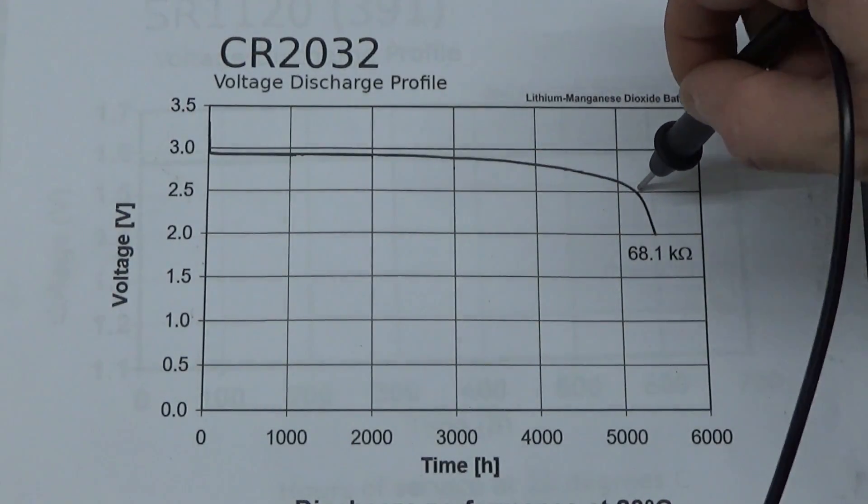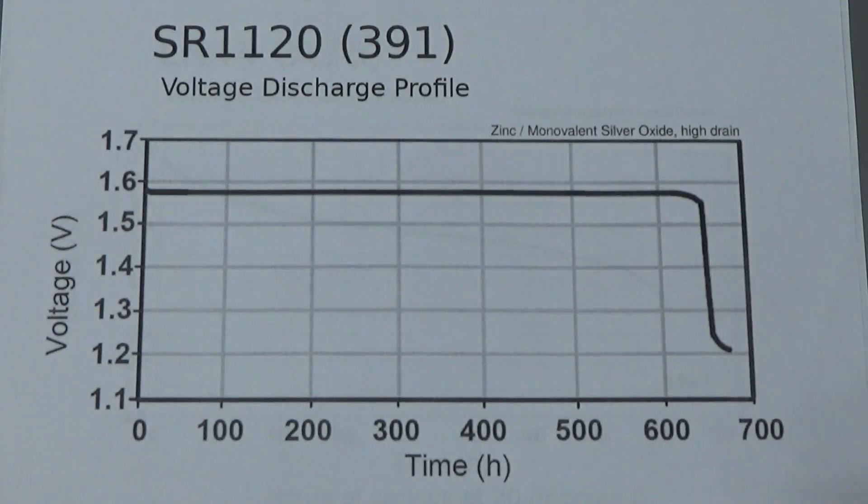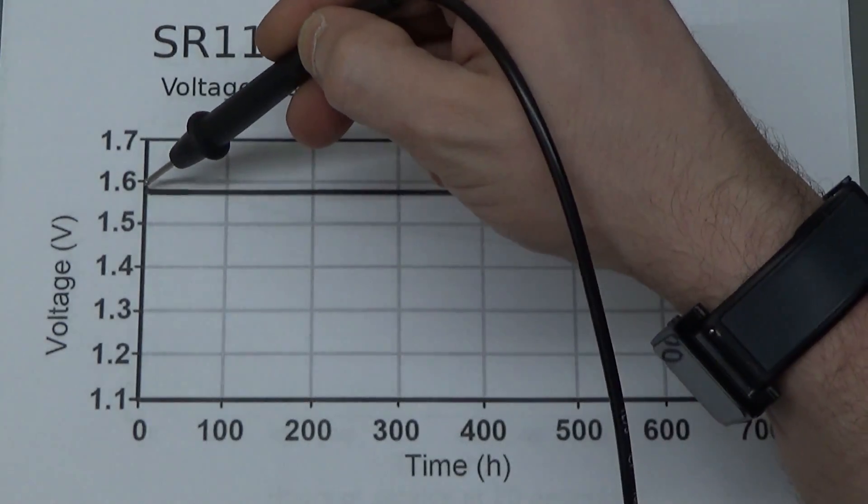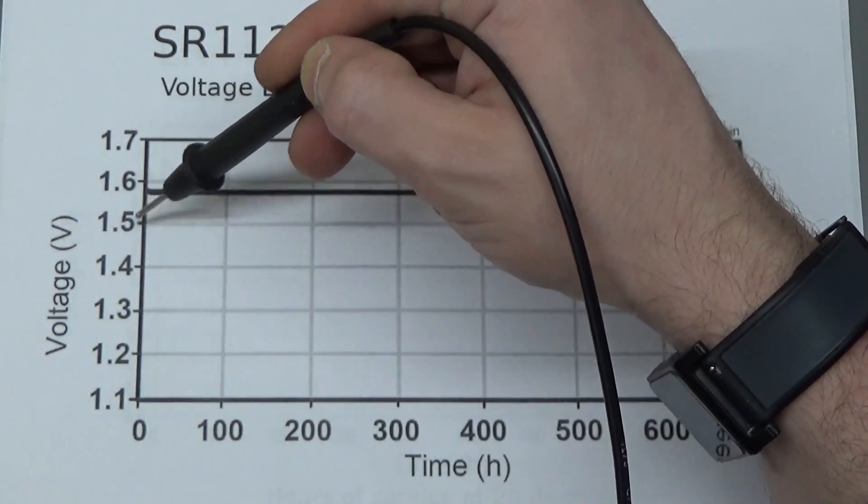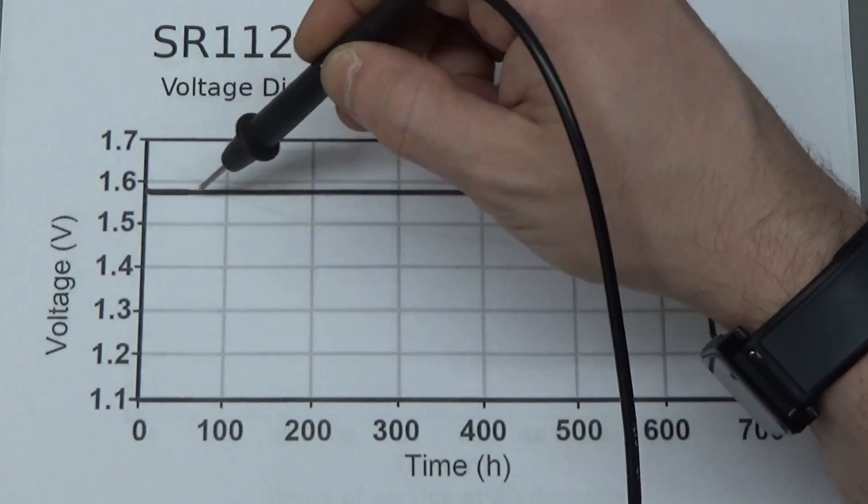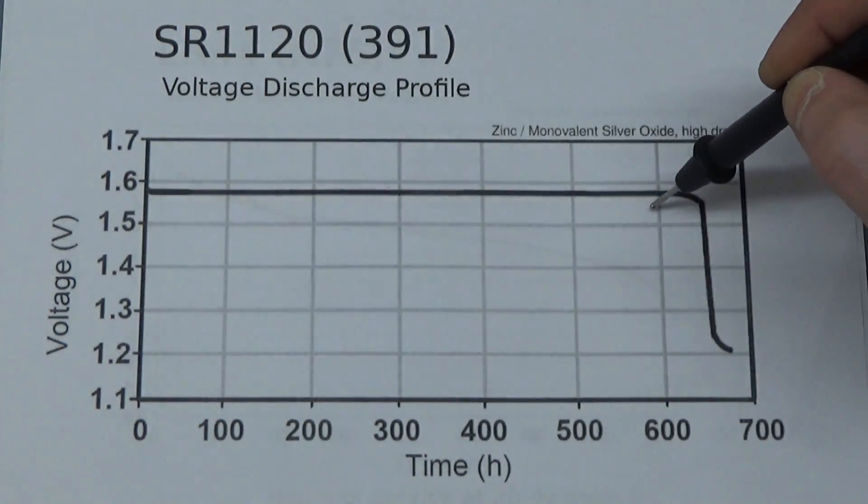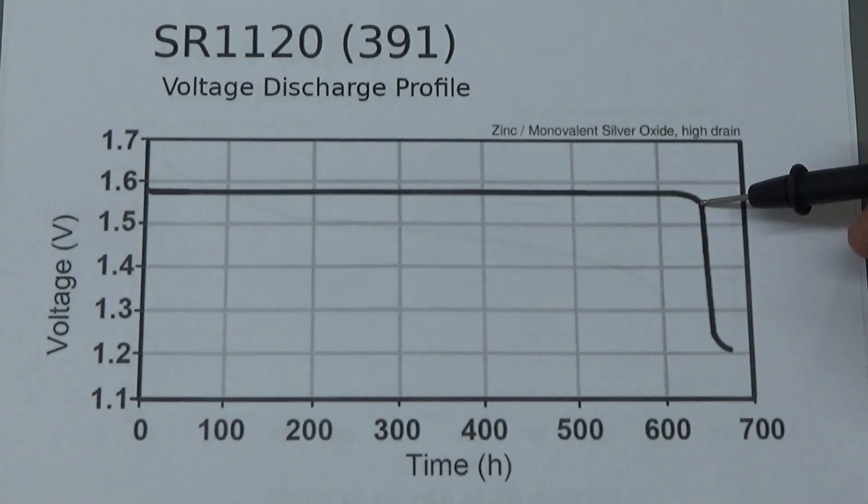This is the SR prefix silver oxide, and you can see this has an extraordinarily steep knee. Here it is at its nominal voltage just above 1.55 volts for the majority of its life, almost its entire life, and then it drops off extremely steeply.